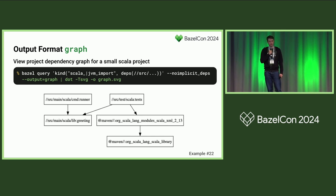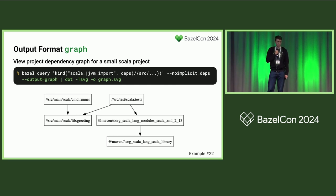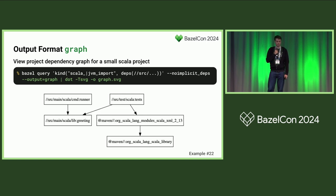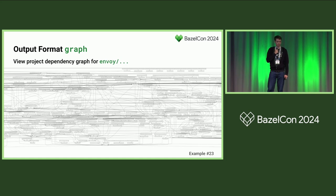If we want to visualize the graph, we can use the graph output format, which outputs the graph in a text form that you can visualize with a tool like the dot command from the GraphViz package, showing it as SVG or PNG. Note that I crafted the query here — removing implicit deps, querying for deps only in the source package, and filtering by kind for Scala targets and JVM import targets to see Maven deps. If you don't scope it down, your graph will probably be useless — this graph of the entire Envoy repo is too dense to extract anything from.